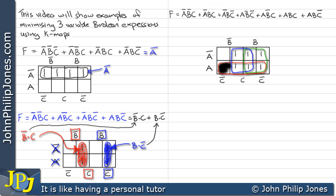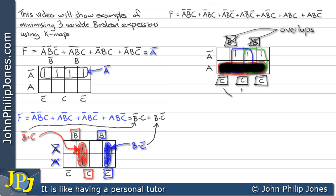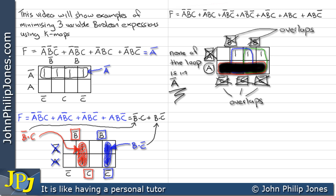Let's highlight the red loop by shading it in. We can quite clearly see that the loop is in both not B and B — when it overlaps a variable like this we discount that variable. We can also see it overlaps not C and C, so we discount that variable too. Looking at the not A area, none of the loop is in not A, so we discount not A. And we can see quite clearly that all of the loop is in the A area — so the loop is referred to as loop A.